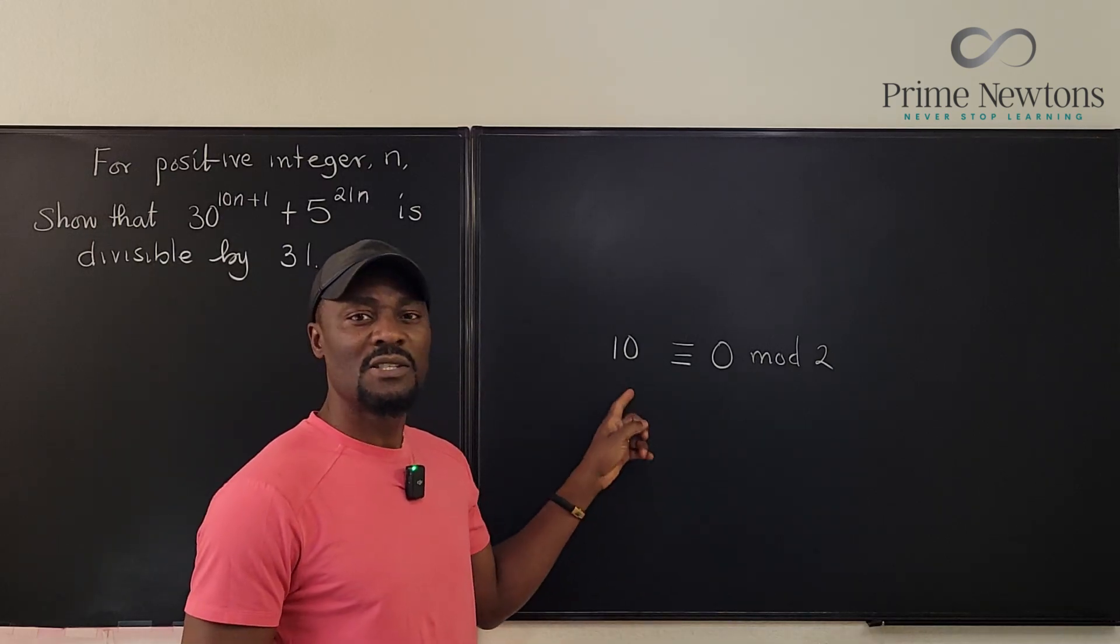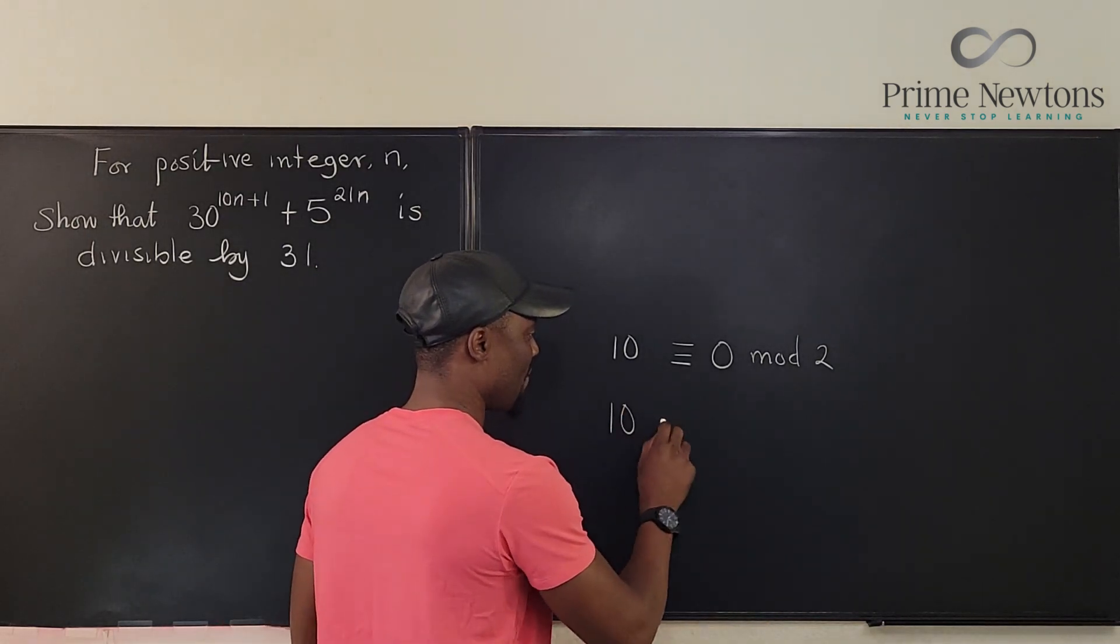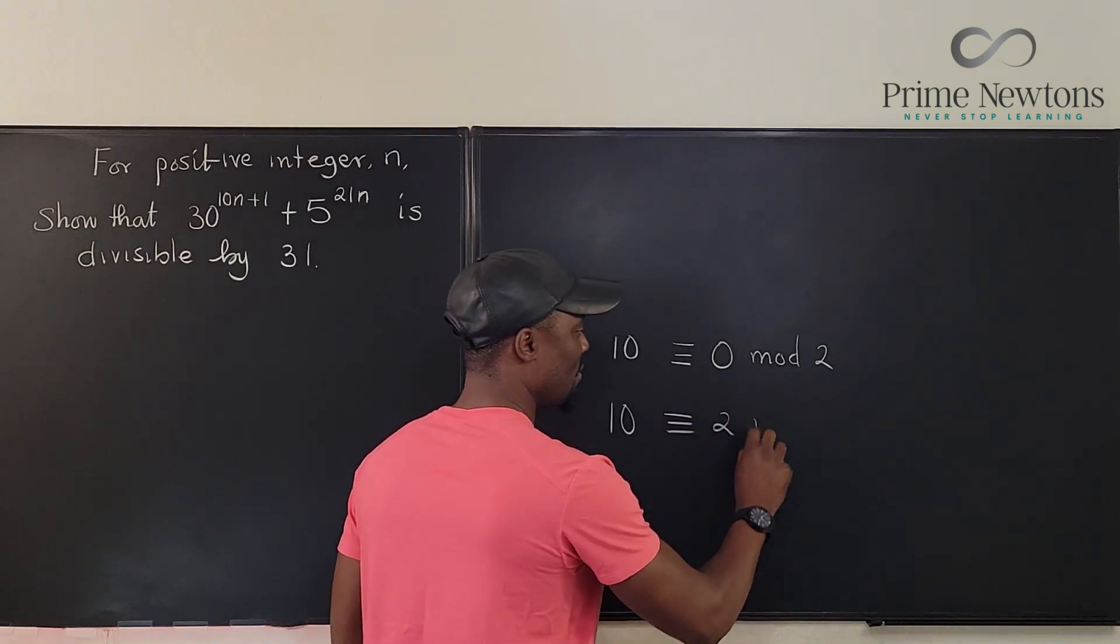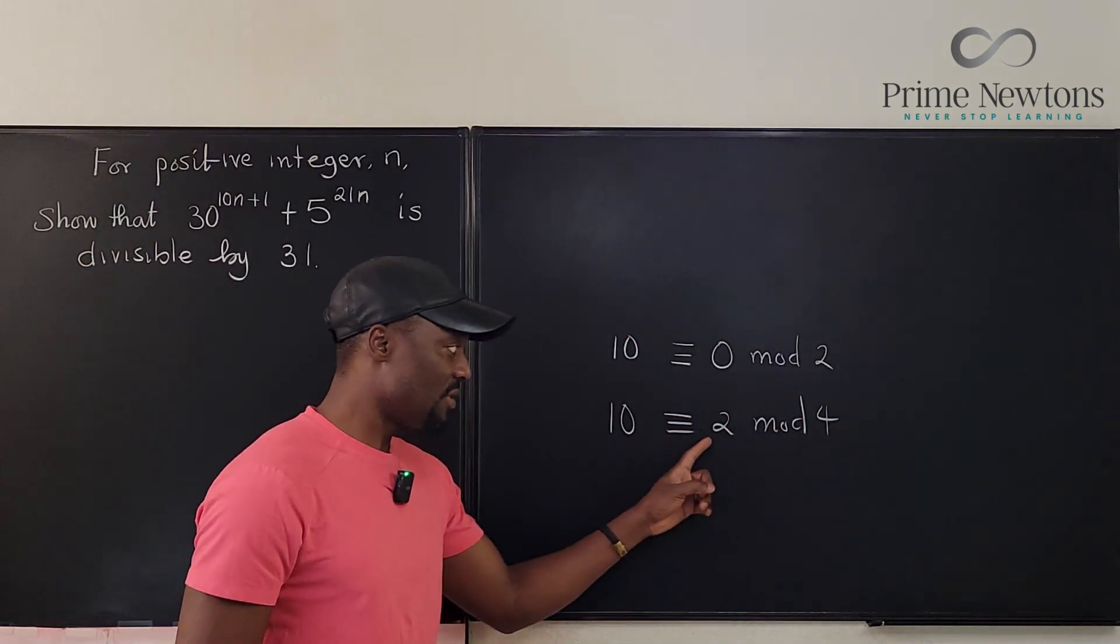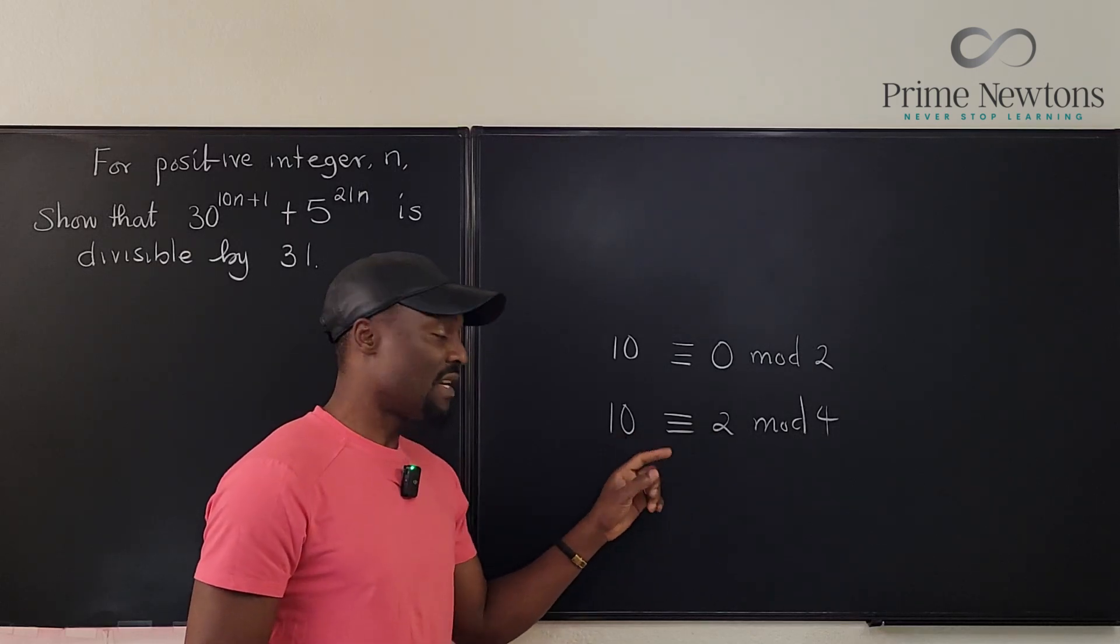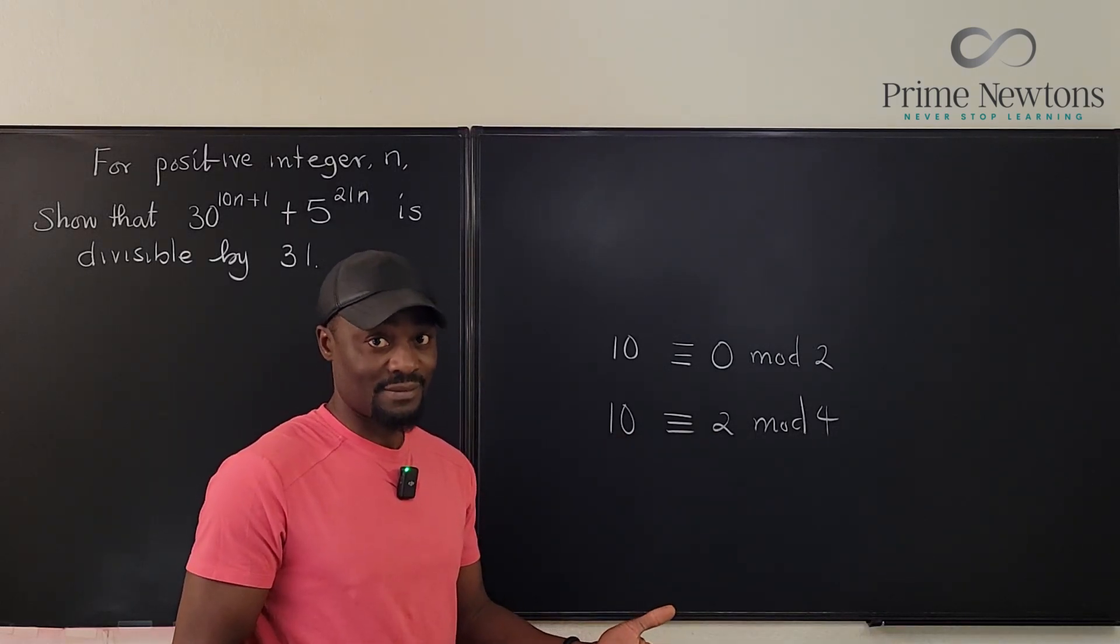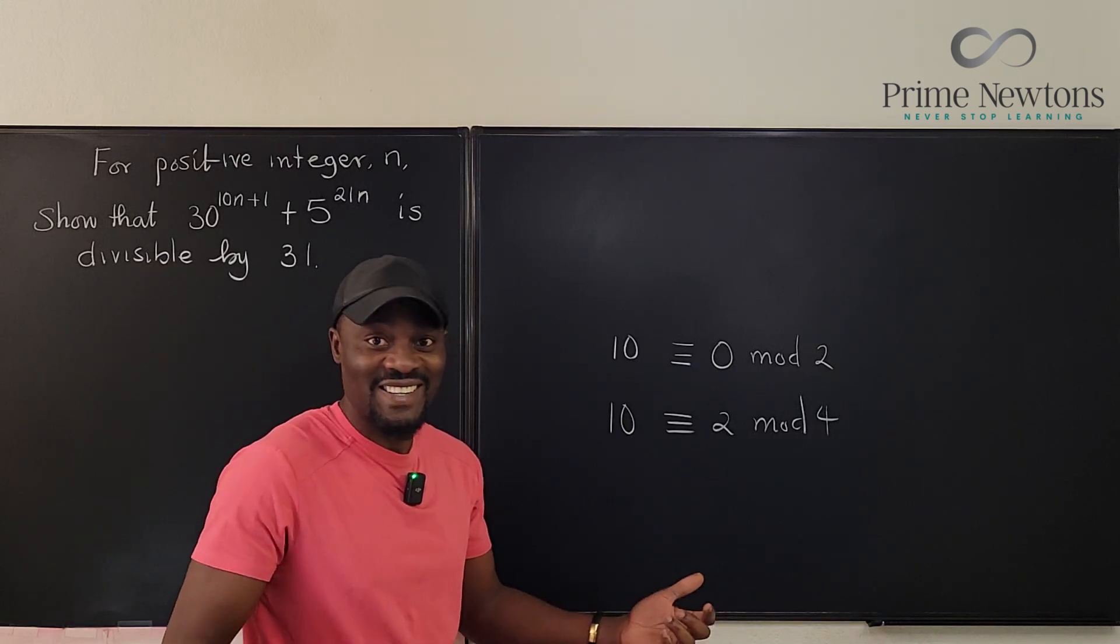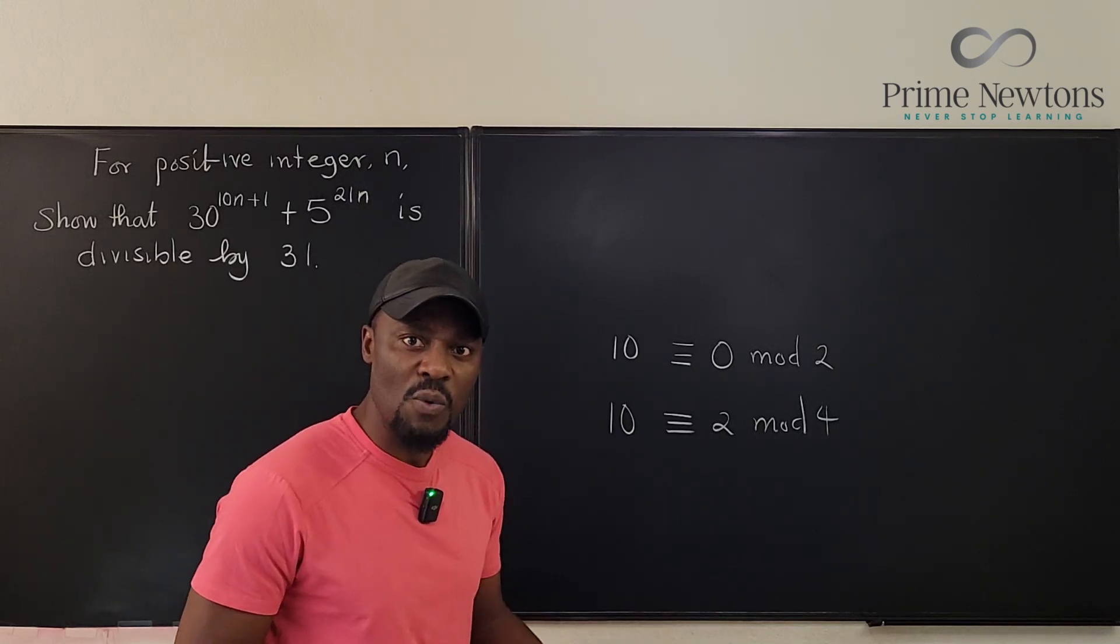But what if we divide this number by four? What would be our mod? Well, we know that 10 will be congruent to two mod four. Because the remainder is going to be two when you divide it by four. Right? Yes. Now, what if we divide it by nine? What would it be? Well,